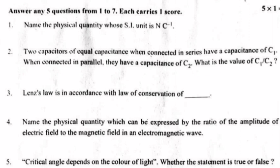Question 1: Name the physical quantity whose SI unit is Nc raised to minus 1. Answer: Electric intensity. E equals F by q.